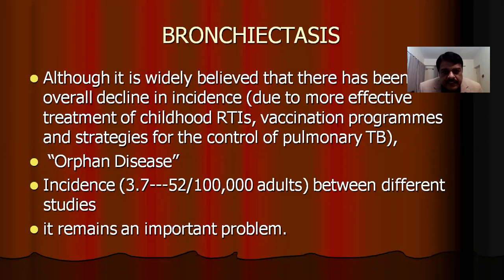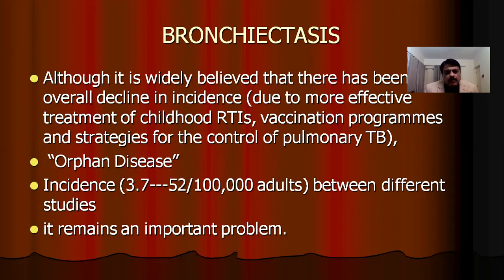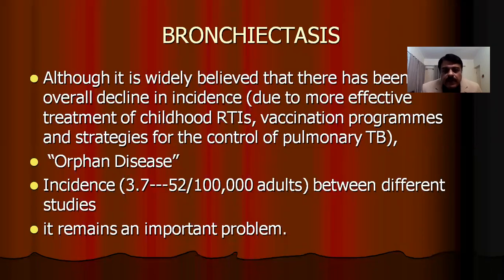Although bronchiectasis is widely believed to be low in incidence, this has been termed an orphan disease — a phrase coined by colleagues in the West — because the incidence there ranges between 3.7 to 52 per 100,000 adults. However, in developing countries like India and Asia, it remains an important problem.